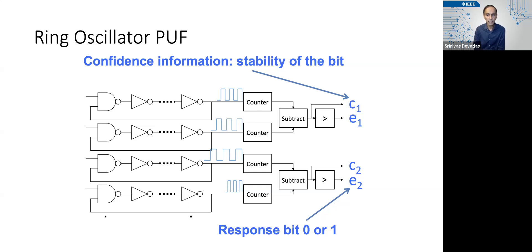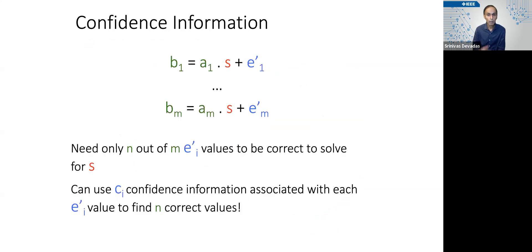We're not going to expose the cᵢ or the eᵢ values to the adversary. I want to make that clear. But what we can do is given that M is greater than N, and we only need N out of these M e′ᵢ values to be exactly correct. And as long as we know what these are, we have essentially N equations that we could use to solve for s.